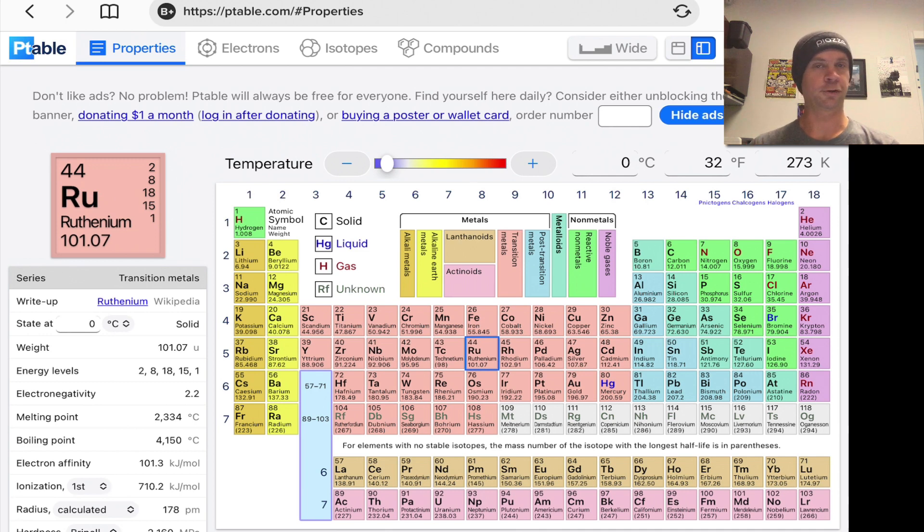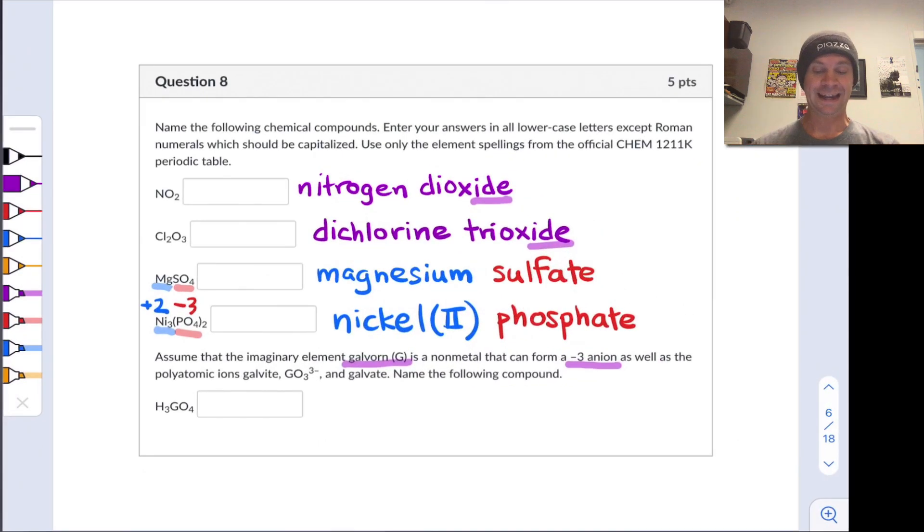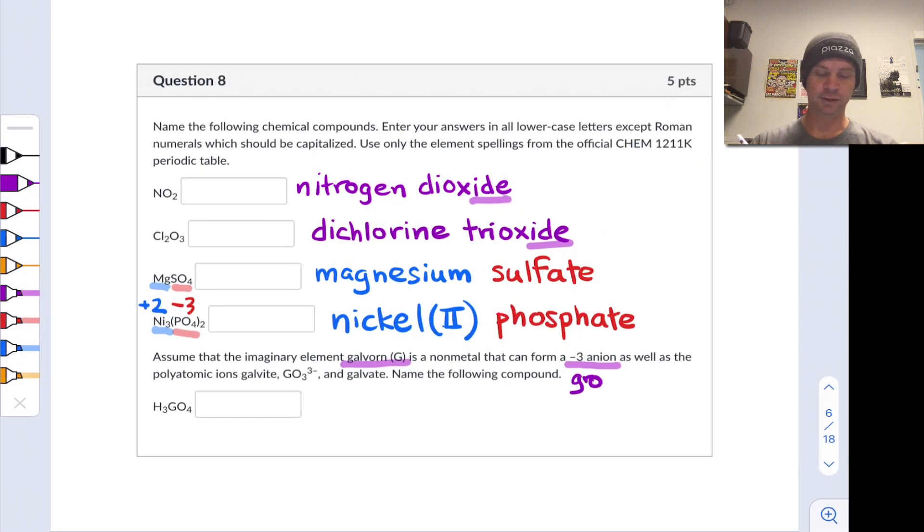This suggests or this gets my brain thinking about group 15, the nitrogen group: nitrogen, phosphorus, arsenic. These are nitrogen and phosphorus in particular, elements that can form monatomic anions with a charge of negative three. So just in case it's useful, I'm going to jot down that this is a group 15 element. We also have information about the types of ions formed by this element with oxygen, the types of polyatomic oxyanions that it forms. We've got Galvite, GO3^3-, and Galvate, and no formula is given for Galvate.